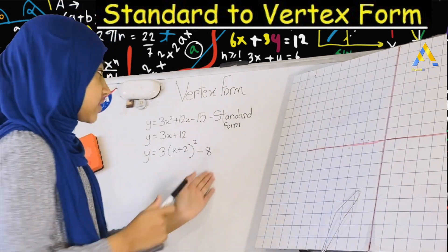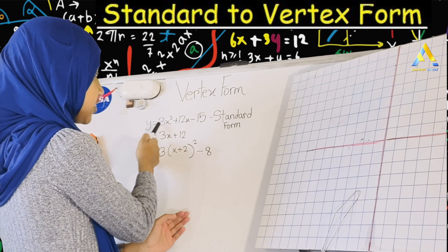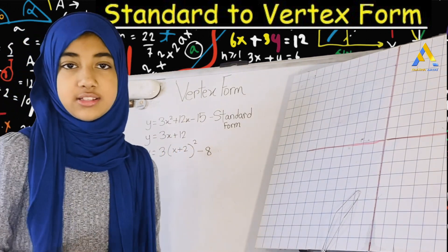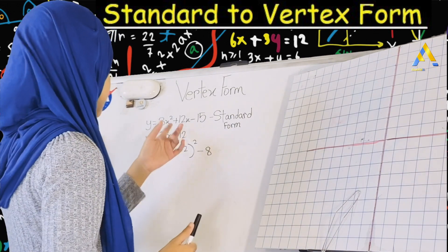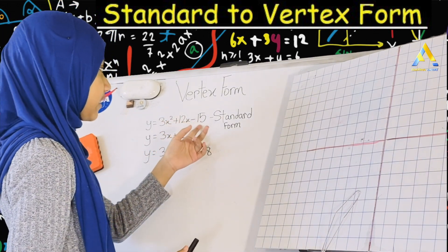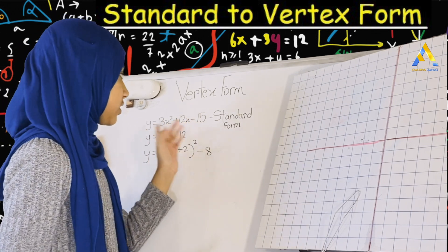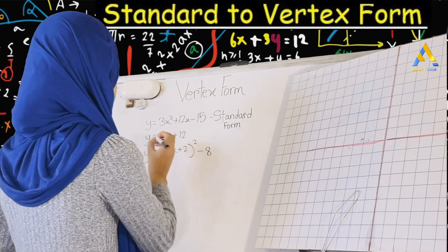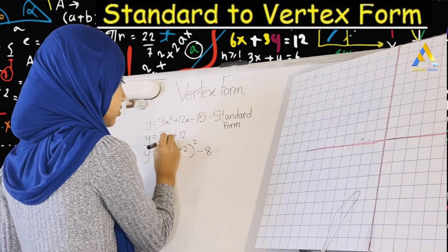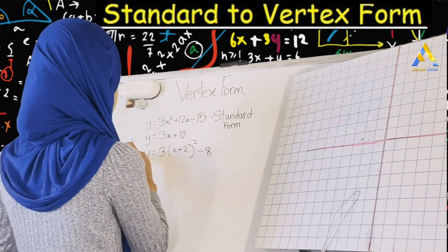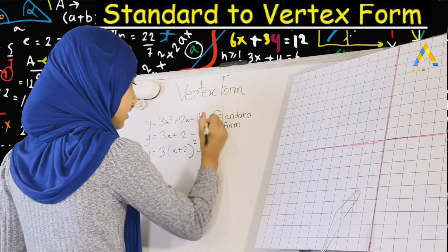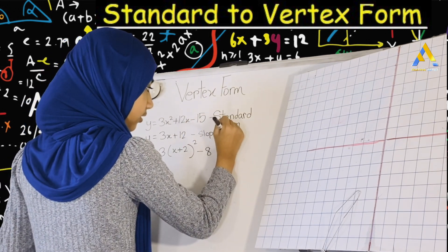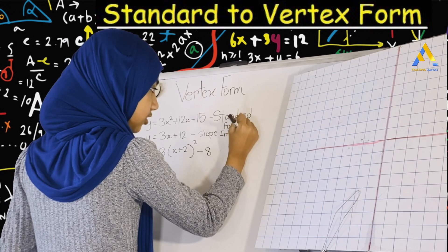This is the standard form because 3 is our coefficient, 12 is our coefficient, and 15 is our constant. Now just from that, you see here is x squared, this is x to the power of 1, and here is x to the power of 0. So from this you can understand this is the standard form. I also showed you y equals 3x plus 12 — this is the slope-intercept form.